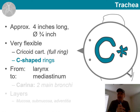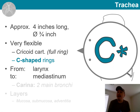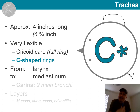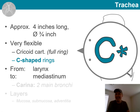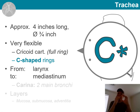The trachea, with its C-shaped cartilage rings, is positioned more anteriorly. And posteriorly to it is the esophagus. So in case there is something large that needs to go down your esophagus, it can actually extend a little bit into the space normally held by the trachea — thanks to these cartilage rings being open from the back.